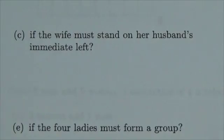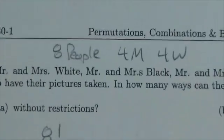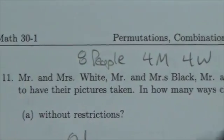Hi everybody. This is a permutation with restrictions — let's take a quick look. We have four couples, so there are eight people: four men and four women.